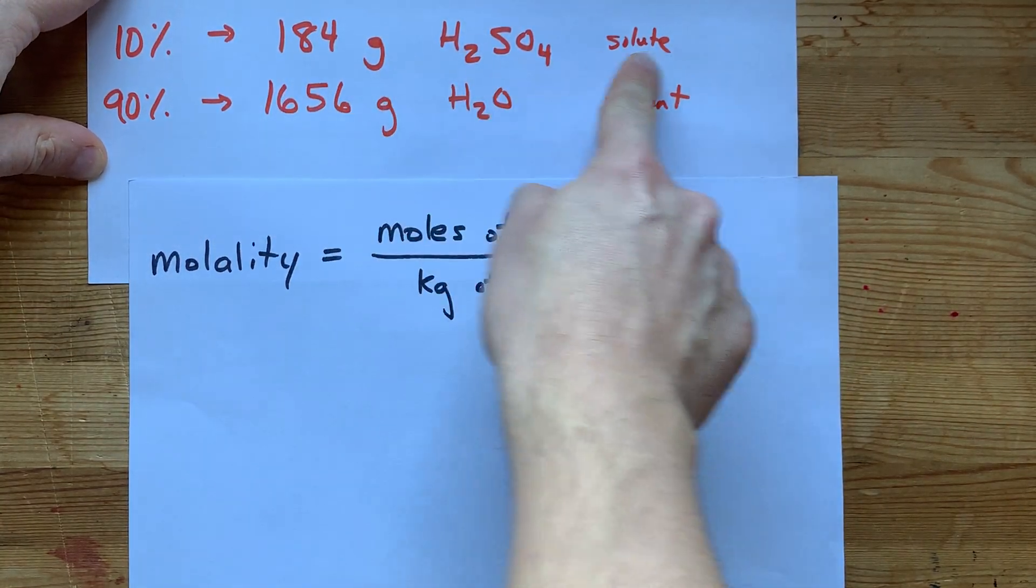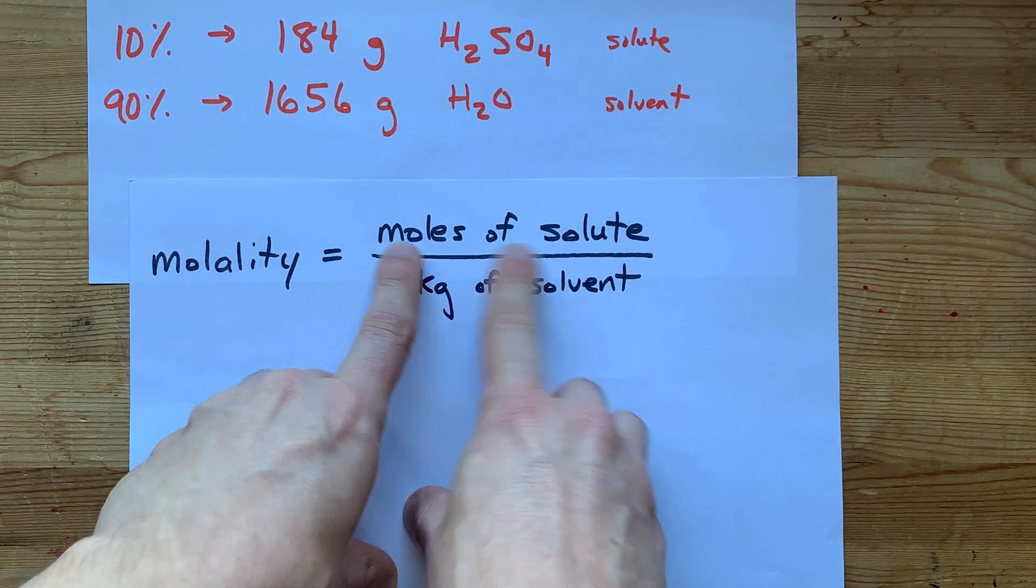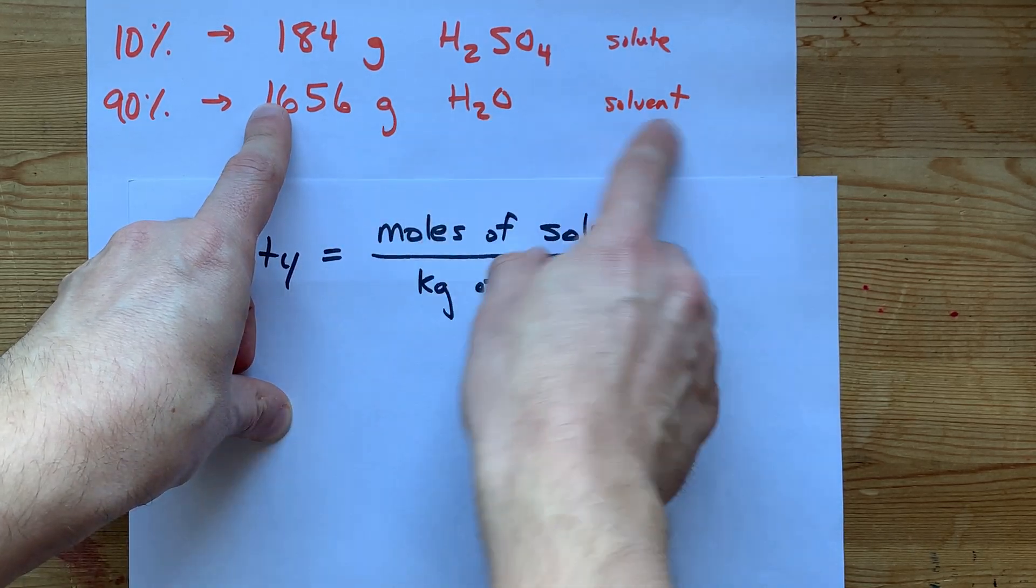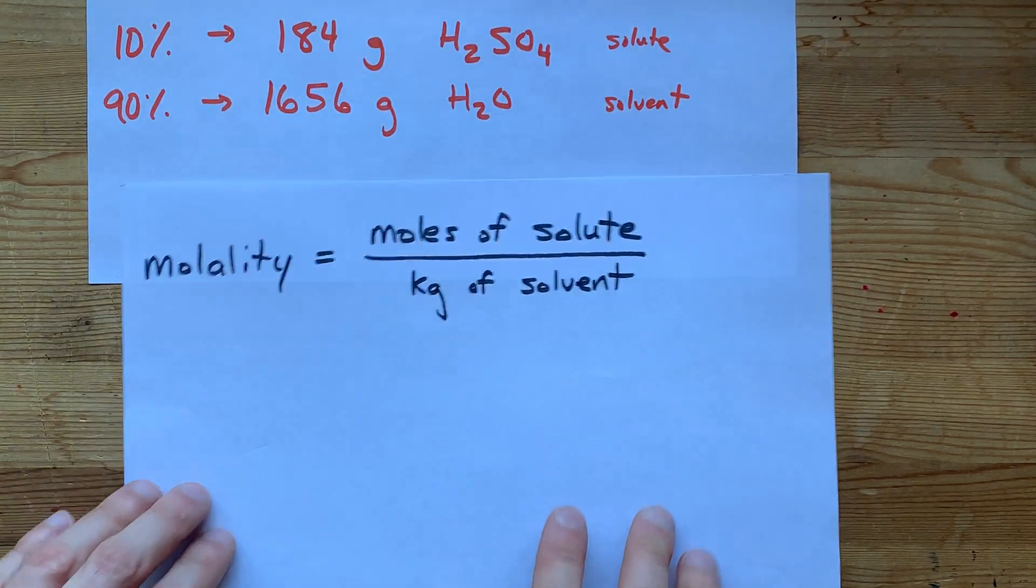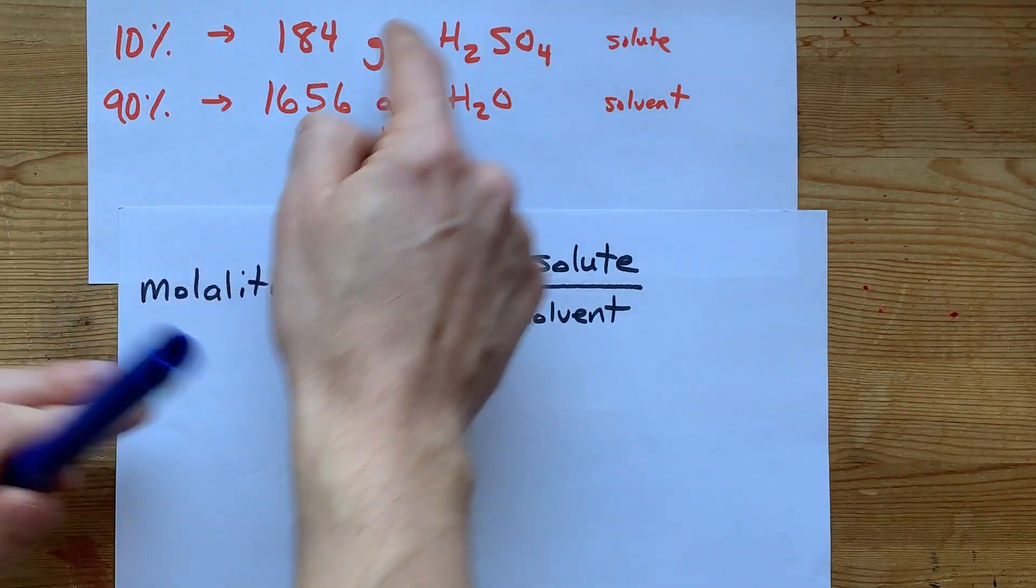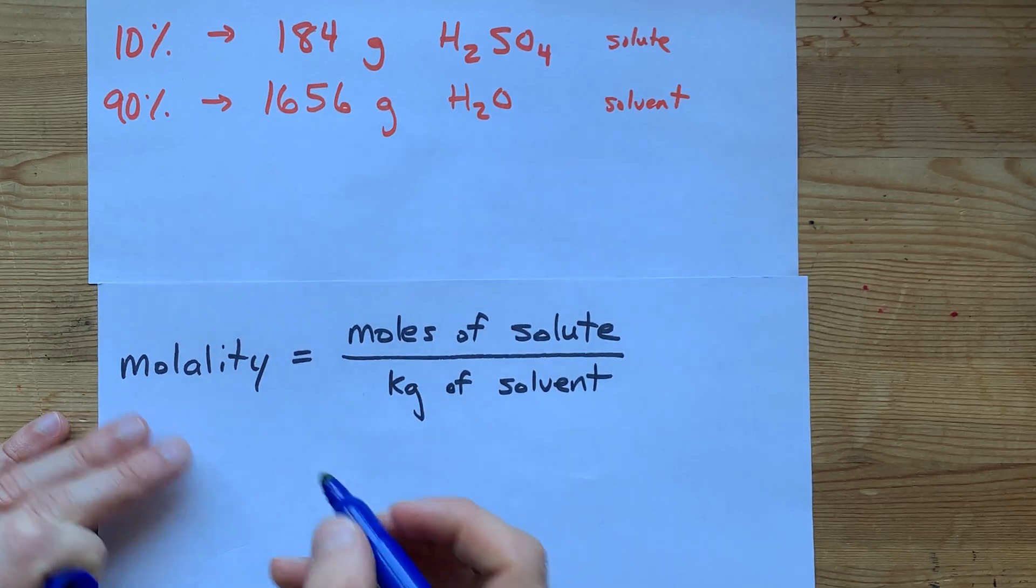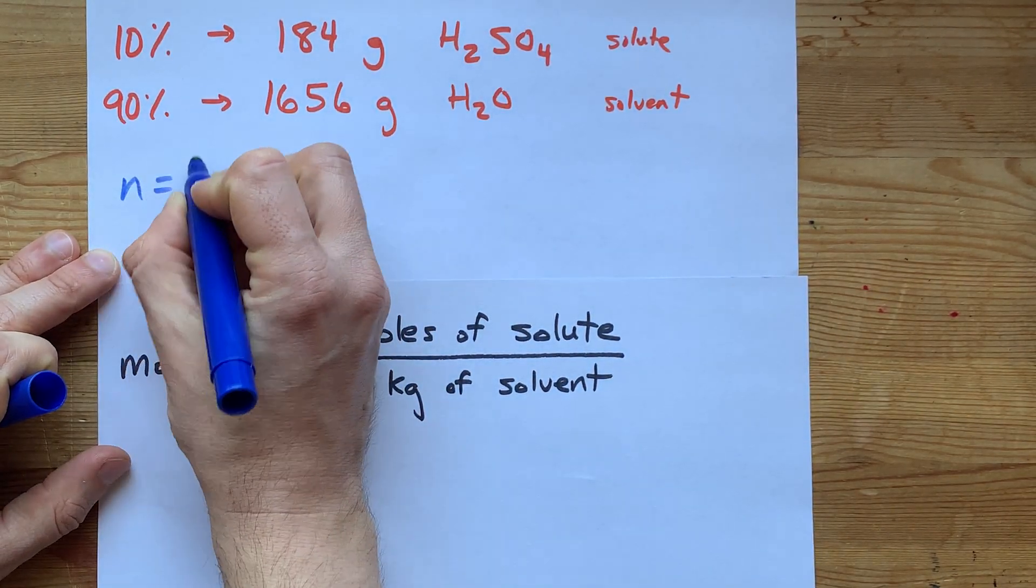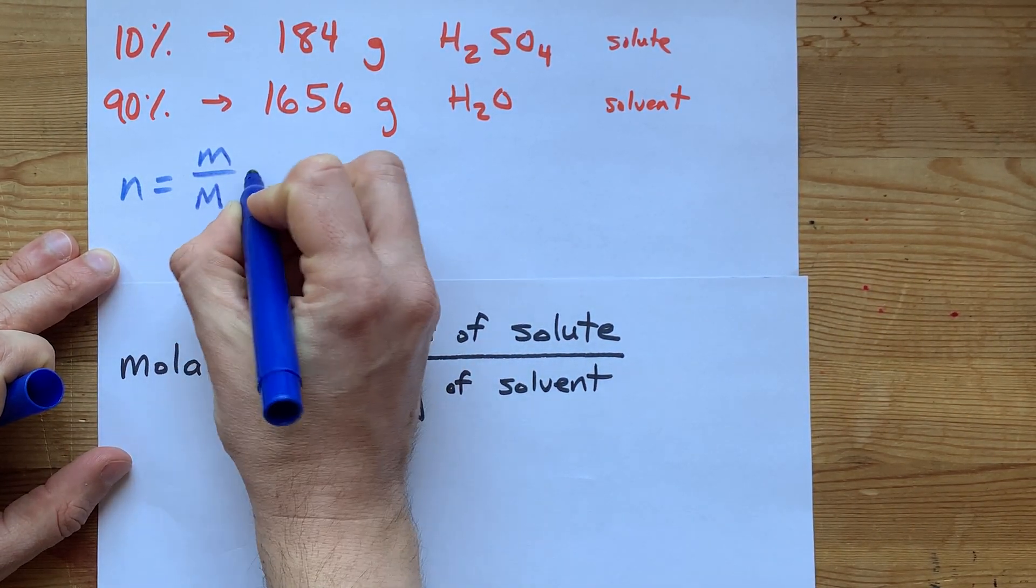184 grams of solute will have to get converted into moles. This number of grams of solvent will have to get converted into kilograms. Actually, that's going to be really easy. But how do you convert grams to moles for something like sulfuric acid? Moles is mass divided by molar mass.